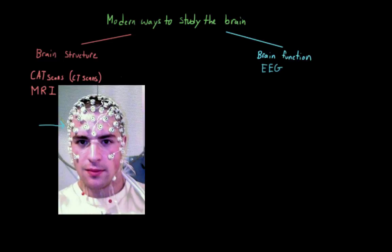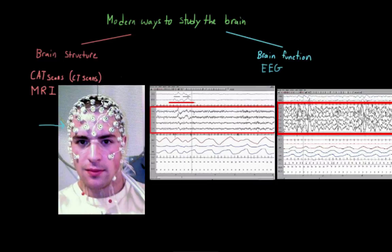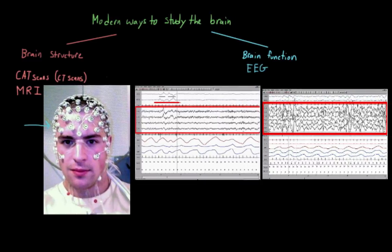But because they are external to the brain, because they're external to the cells, they can't really tell us anything about the activity of individual neurons or even groups of neurons. Instead, they look at the sum total electrical fields that are generated from the brain. Unlike structural methods, like CAT scans and MRIs, we don't get a picture of the brain from an EEG. Instead, we get these wavy lines.